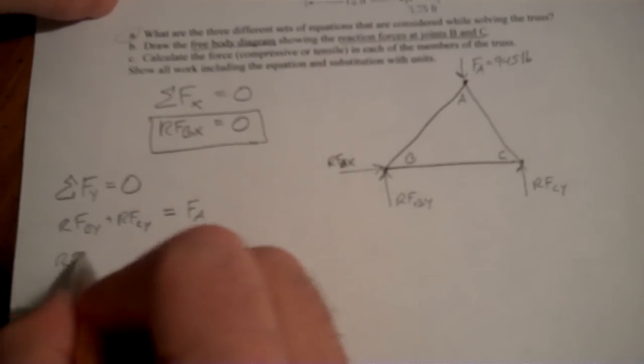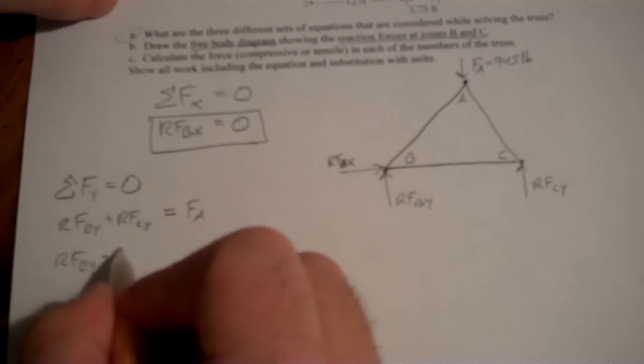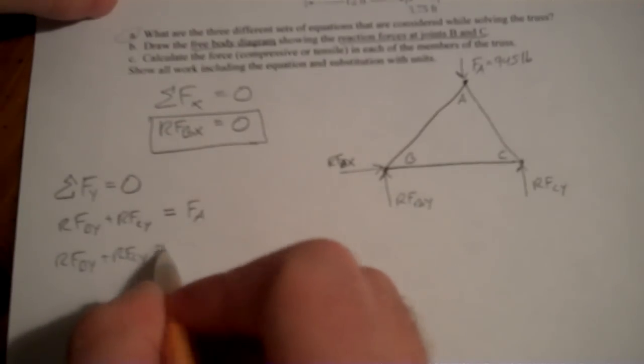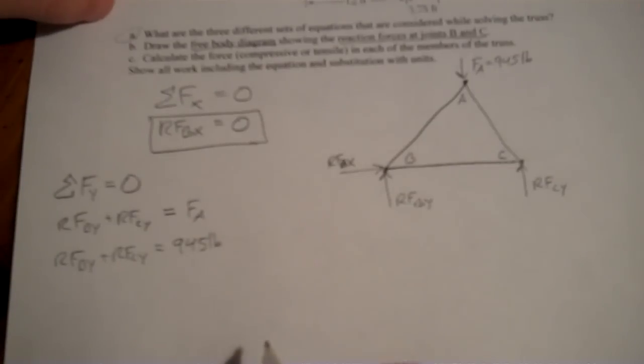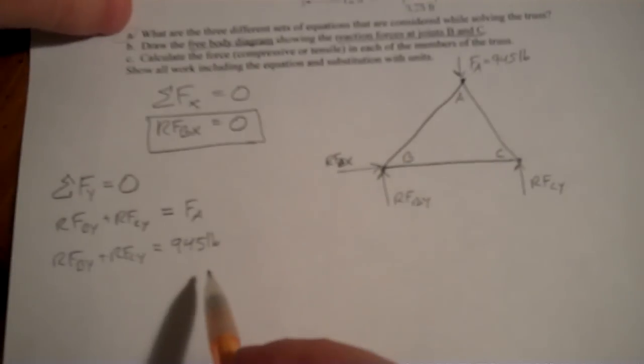Now we know F,A. So RF,B,Y, plus RF,C,Y is equal to 945 pounds. But that's all we know. We don't know either one of these, and that's as far as we can go with this equation.